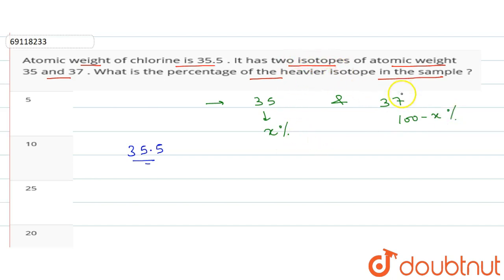Now, we have to find the percentage of the heavier isotope. We need to use the average atomic mass formula. The average of these two isotopes, the average atomic weight divided by 100.